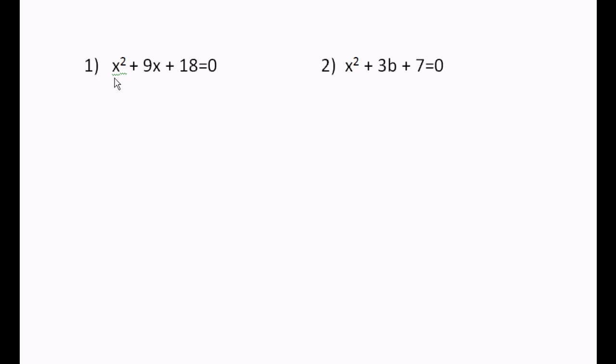So number 1, the number in front of x squared, there's an invisible 1 sitting there. So a equals 1. The number in front of the x is b, b equals 9. And the number by itself without an x is c, c is 18.